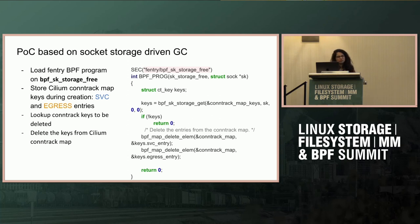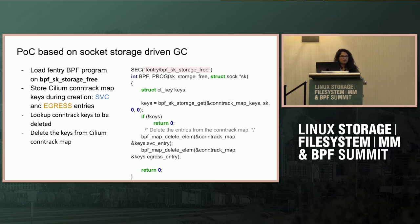The suggestion is hooking into the INET socket close event. Since you have the socket, you can look up socket storage, find all the conntrack entries, and remove them. The speaker agrees it might be a better solution, though the downside is receiving notifications on all sockets, not just those we created storage for. However, a socket storage lookup is relatively cheap if the entry isn't there — just checking a pointer — so there shouldn't be much overhead.